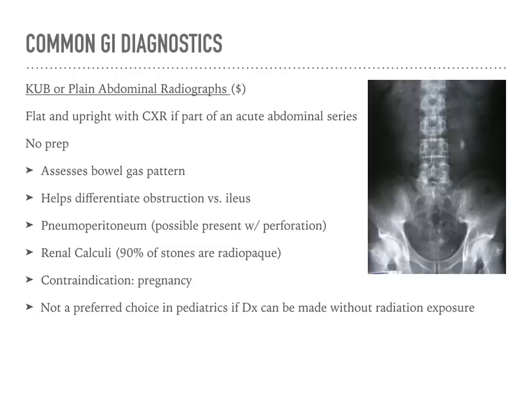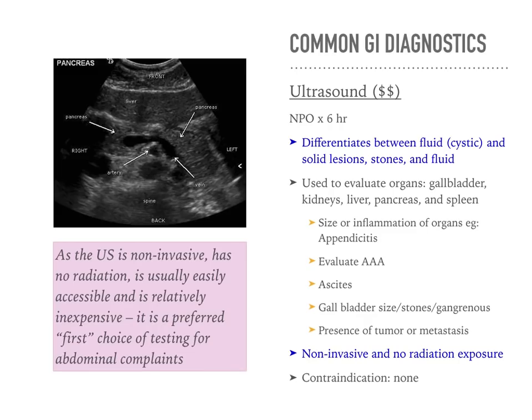When looking at the abdomen with other radiology tests, we can use ultrasound. Ultrasound is relatively quick and easy, with absolutely no radiation, making it safe to perform on most patients. It can differentiate between fluids and stones, evaluate for appendicitis and gallstones, and assess for gross tumors in the abdomen as well.